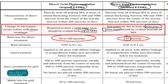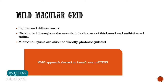The modified ETDRS is equally effective as the original. It has been shown that even a mild gray burn over a longer period is as beneficial as a dense white burn. The key advantage is that complications are much fewer when aiming for a mild gray-white burn compared to a dense white burn.